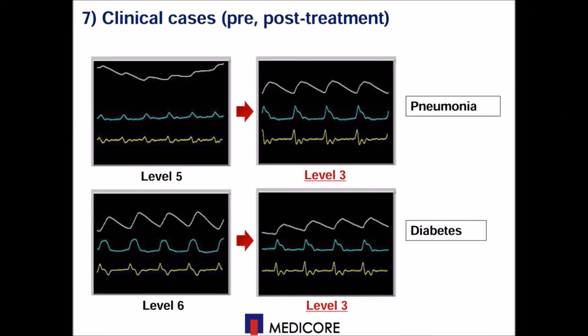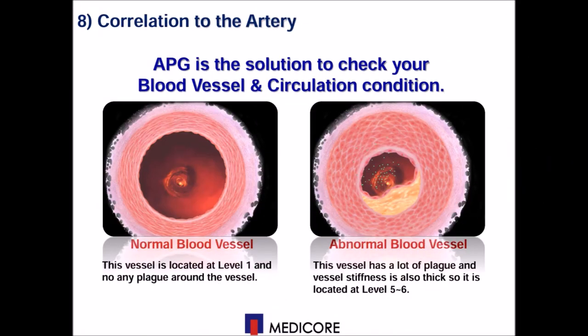As a simple case study, when you look at the pre- and post-treatment results, it shows much change from type 5 to type 3 in pneumonia and type 6 to type 3 in diabetics. Therefore, if you use this system, your client will be satisfied with your treatment. In the left picture, it shows the normal artery, while in the right picture, it shows the abnormality of the artery with plaque. When you use this device with your supplement, you will easily find a difference in the vessel in a couple of months.